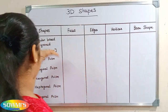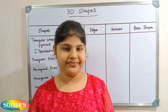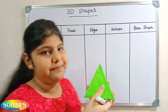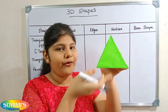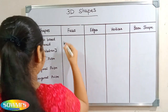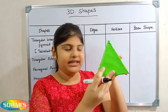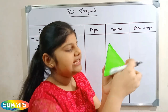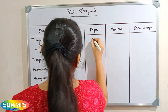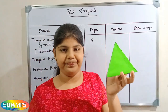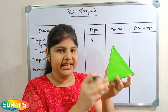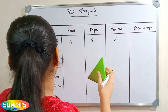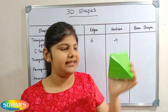Next we will take the triangular base pyramid, which is also called a tetrahedron. We count the faces: 1, 2, 3, 4 — there are four faces in triangular base pyramid. Next we count the edges: 1, 2, 3, 4, 5, 6 — there are six edges in triangular base pyramid. Next we count the vertices: 1, 2, 3, 4 — there are four vertices. The base shape of triangular base pyramid is triangle.